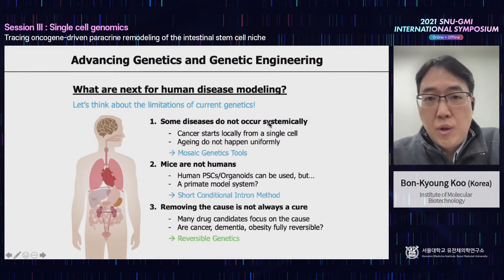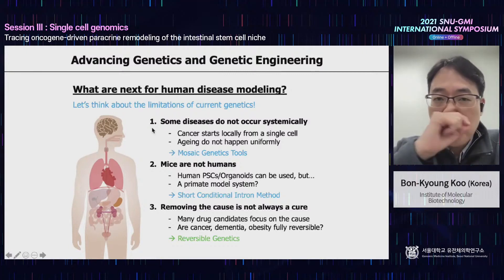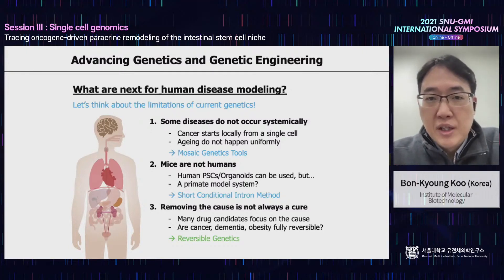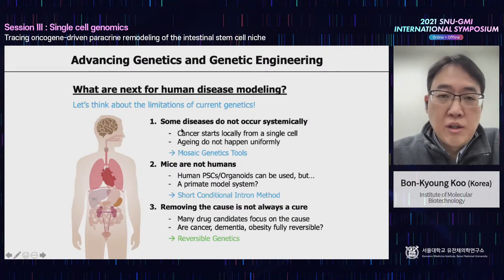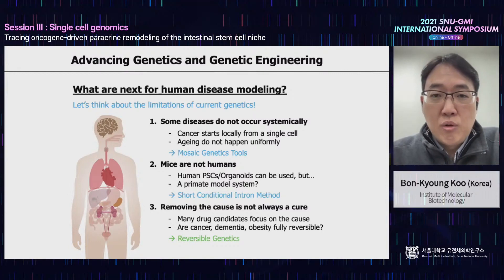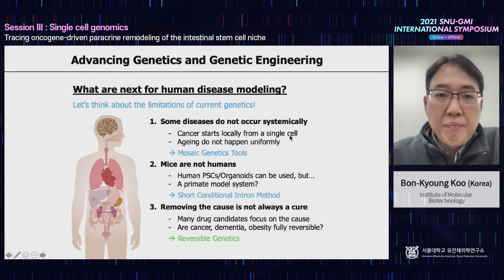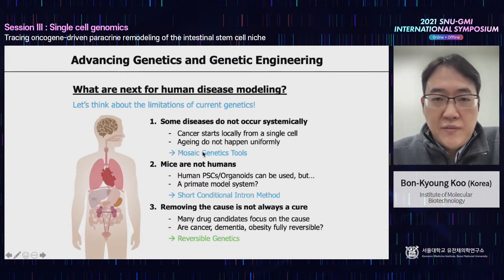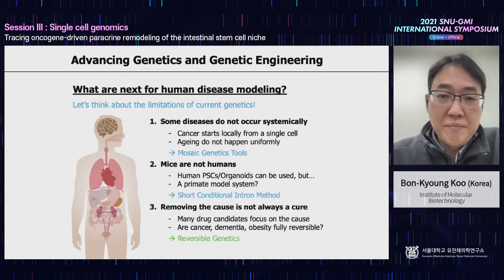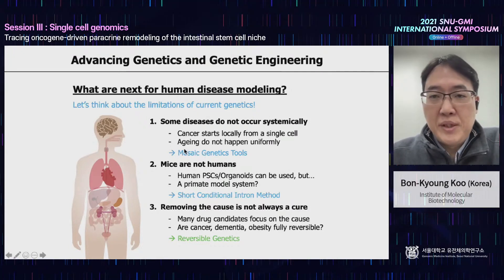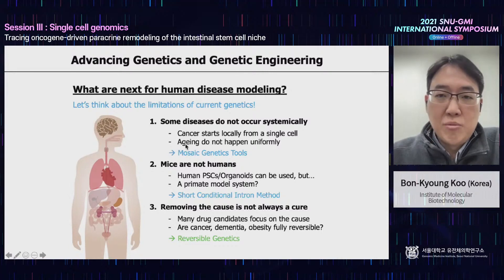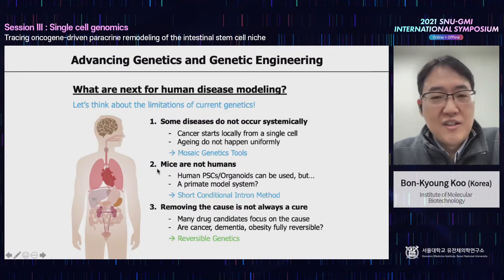There are three thoughts I had at the time. The first is about disease modeling in humans. When we model cancer in the mouse, we knock out tumor suppressors in the entire body or tissue. Whereas in humans, cancer is a clonal disease because it starts from a single cell. We also know that aging is a very stochastic event, and not all cells are aging together. To model these things in mice and recapitulate human disease, we need mosaic genetic tools.